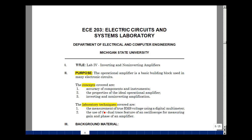The laboratory techniques we're going to look at in the lab are the measurement of true RMS voltage using a digital multimeter and the use of the dual trace feature of the oscilloscope for measuring gain and phase of an amplifier.